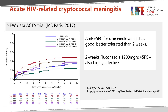In addition, the ACTA trial looked at a number of other induction regimens and showed that amphotericin B and flucytosine for just one week looked at least as good as two weeks and was better tolerated than two weeks of amphotericin B and flucytosine. It also showed that an oral combination of two weeks of high-dose fluconazole at 1200 milligrams a day with flucytosine was also highly effective.